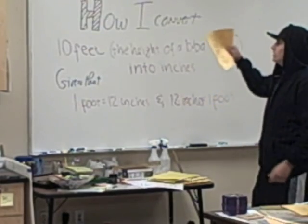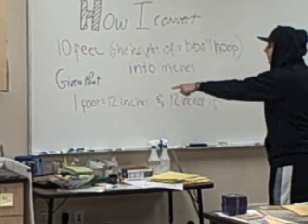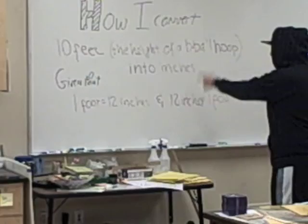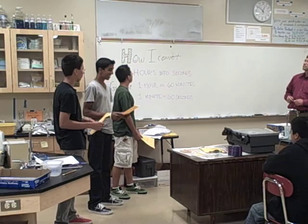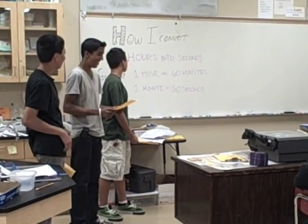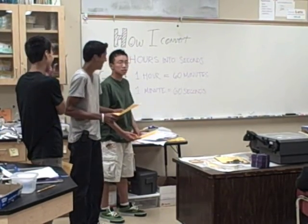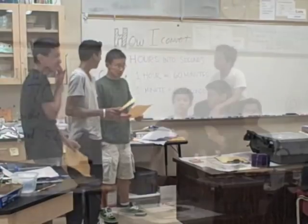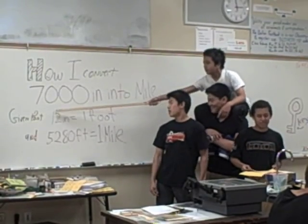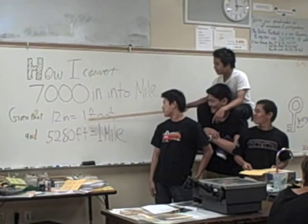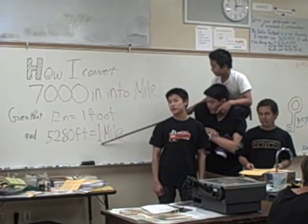How I convert 10 feet — the height of a basketball hoop — into inches, given that 1 foot equals 12 inches and 12 inches equals 1 foot. We're going to convert 7 hours into seconds, given that 1 hour equals 60 minutes and 1 minute equals 60 seconds. How I convert 7,000 inches into miles, given that 12 inches equals 1 foot and 5,280 feet is 1 mile.